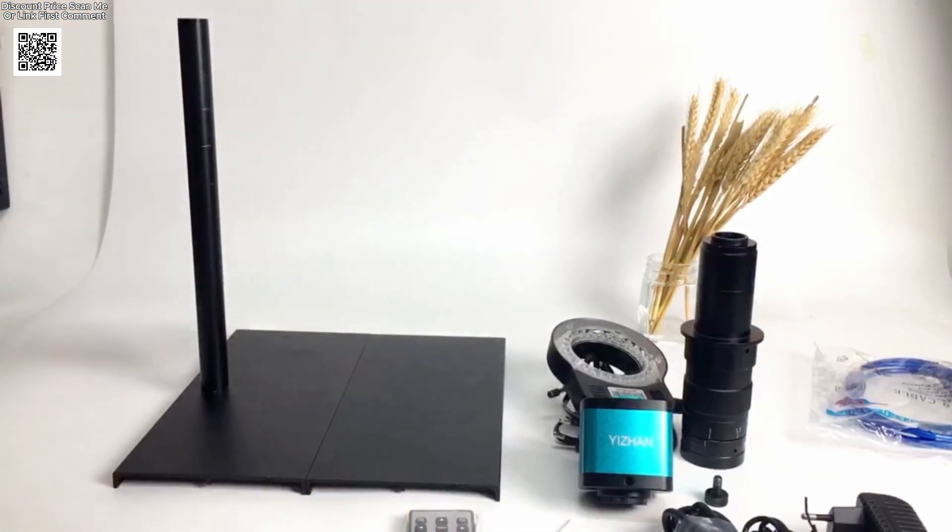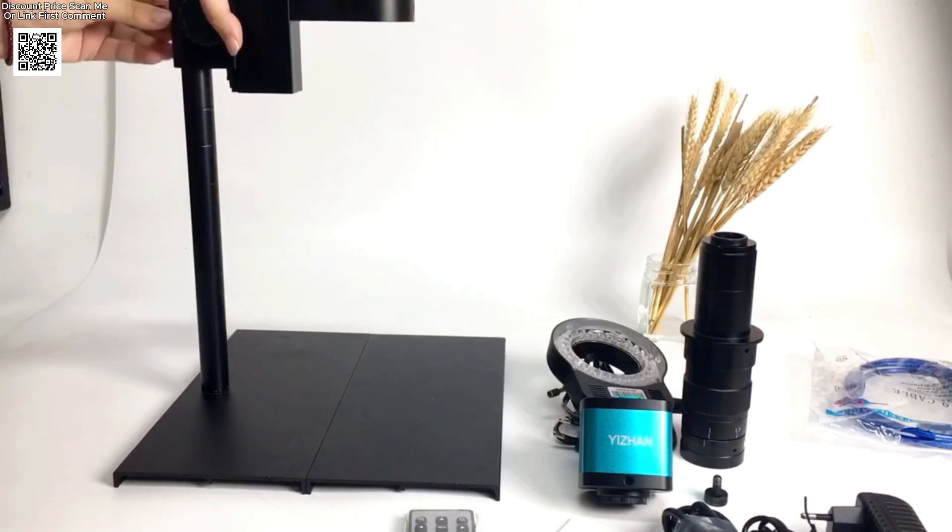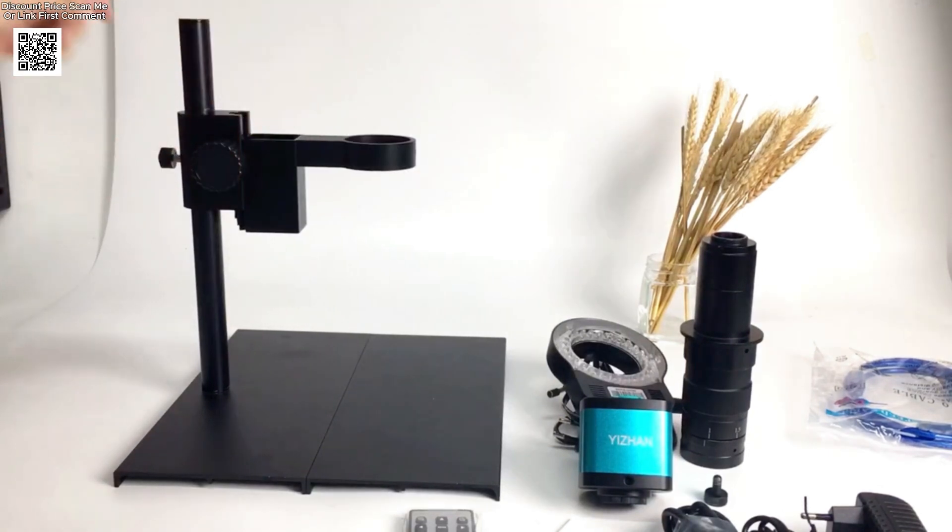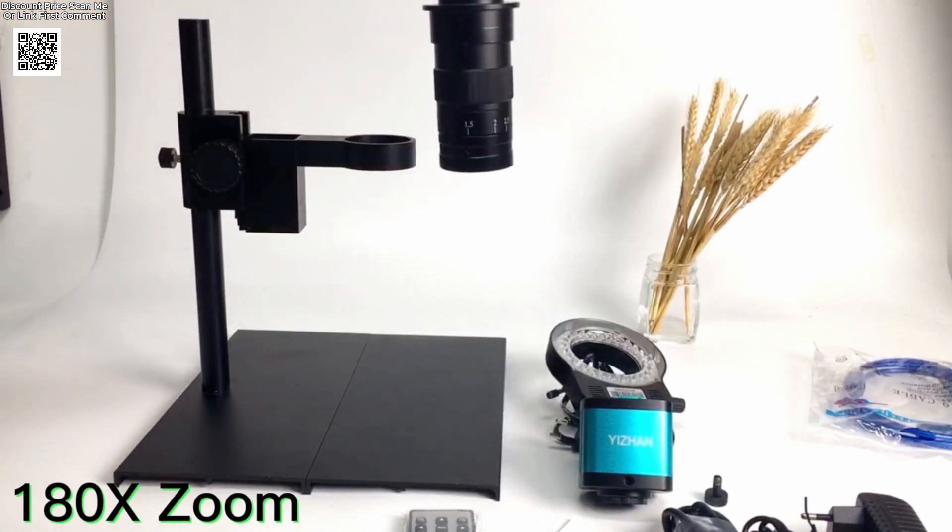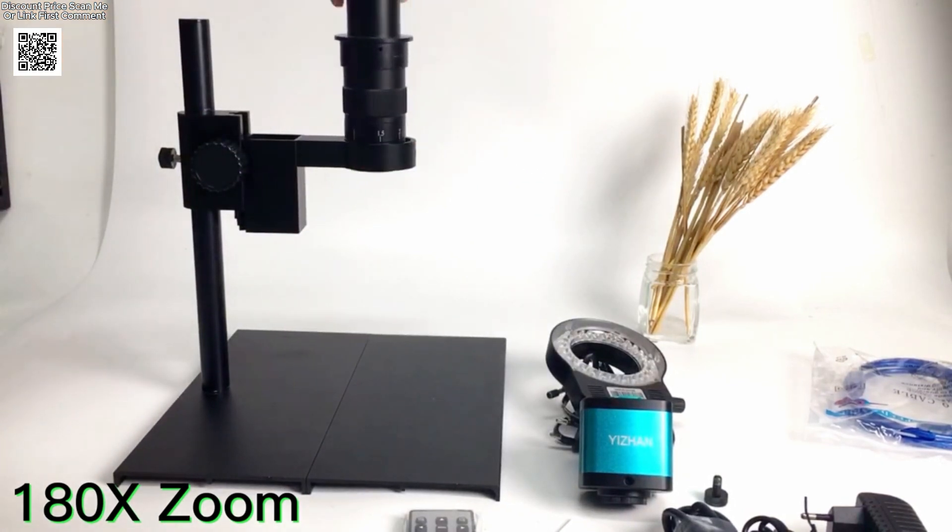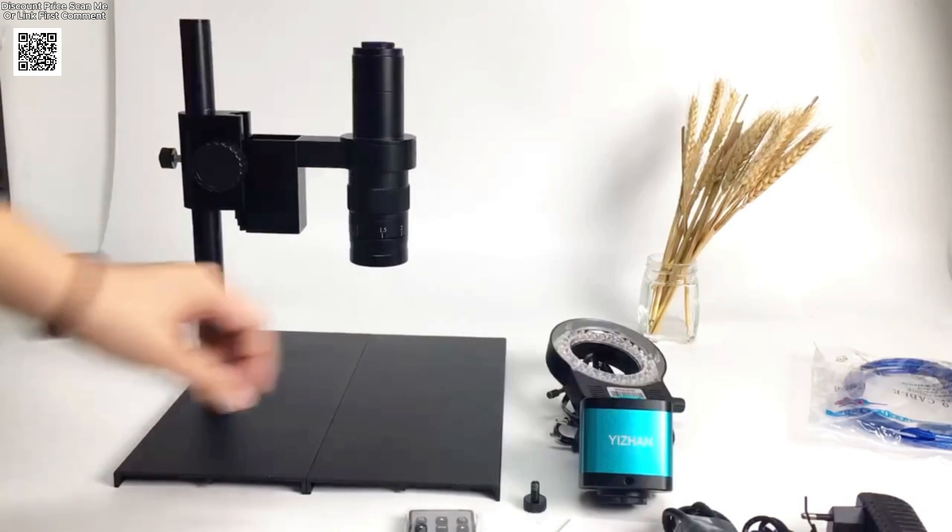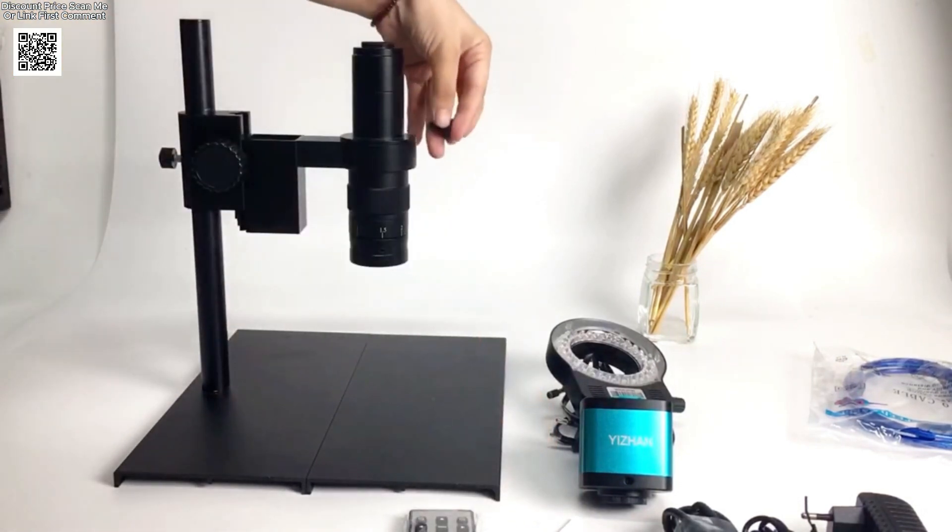With a durable all-metal housing and multilingual menu options, this microscope is built for professional use. The included C-mount lens offers continuous zoom from 1 to 180 times with a working distance between 100 and 150 millimeters.